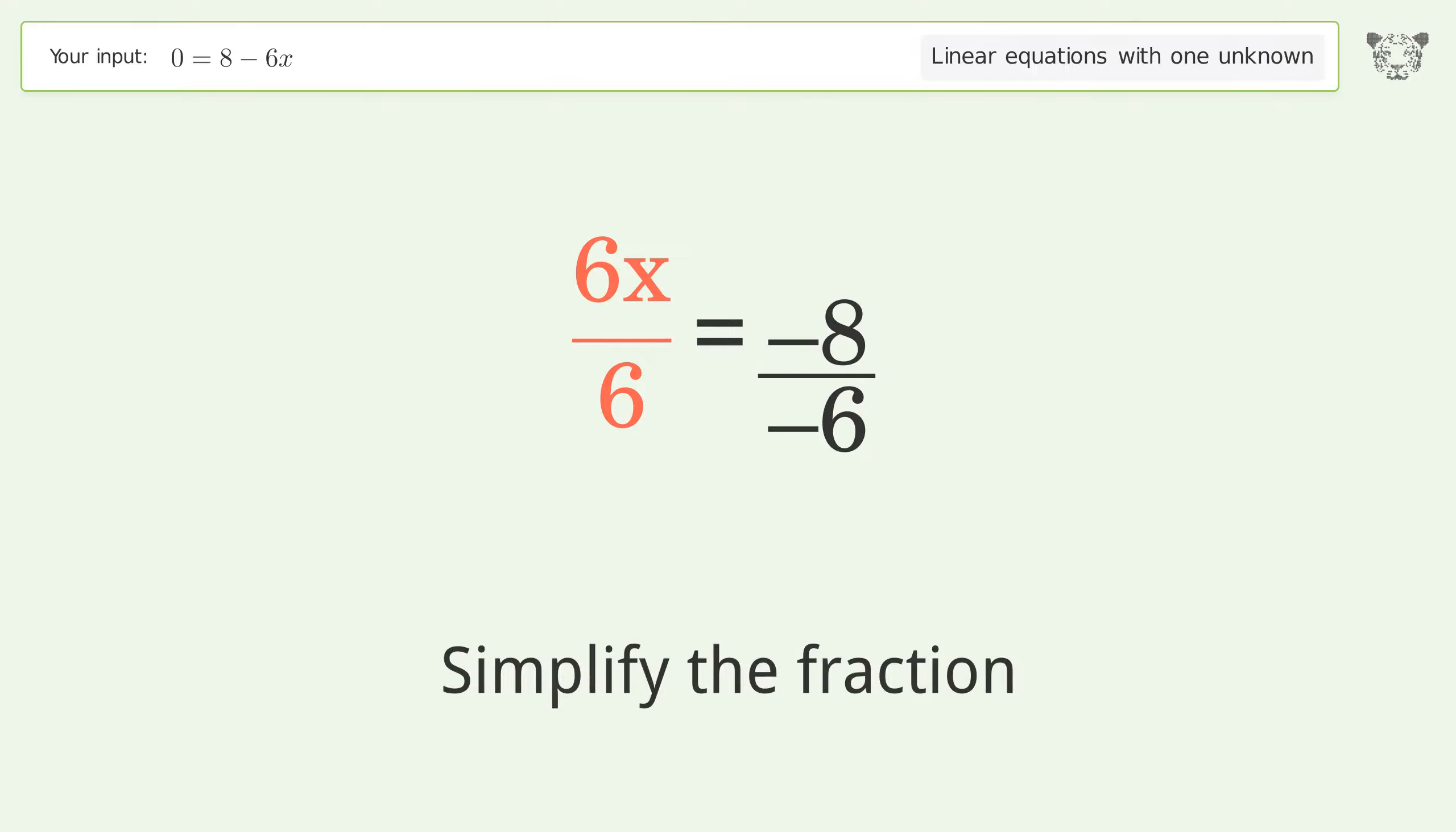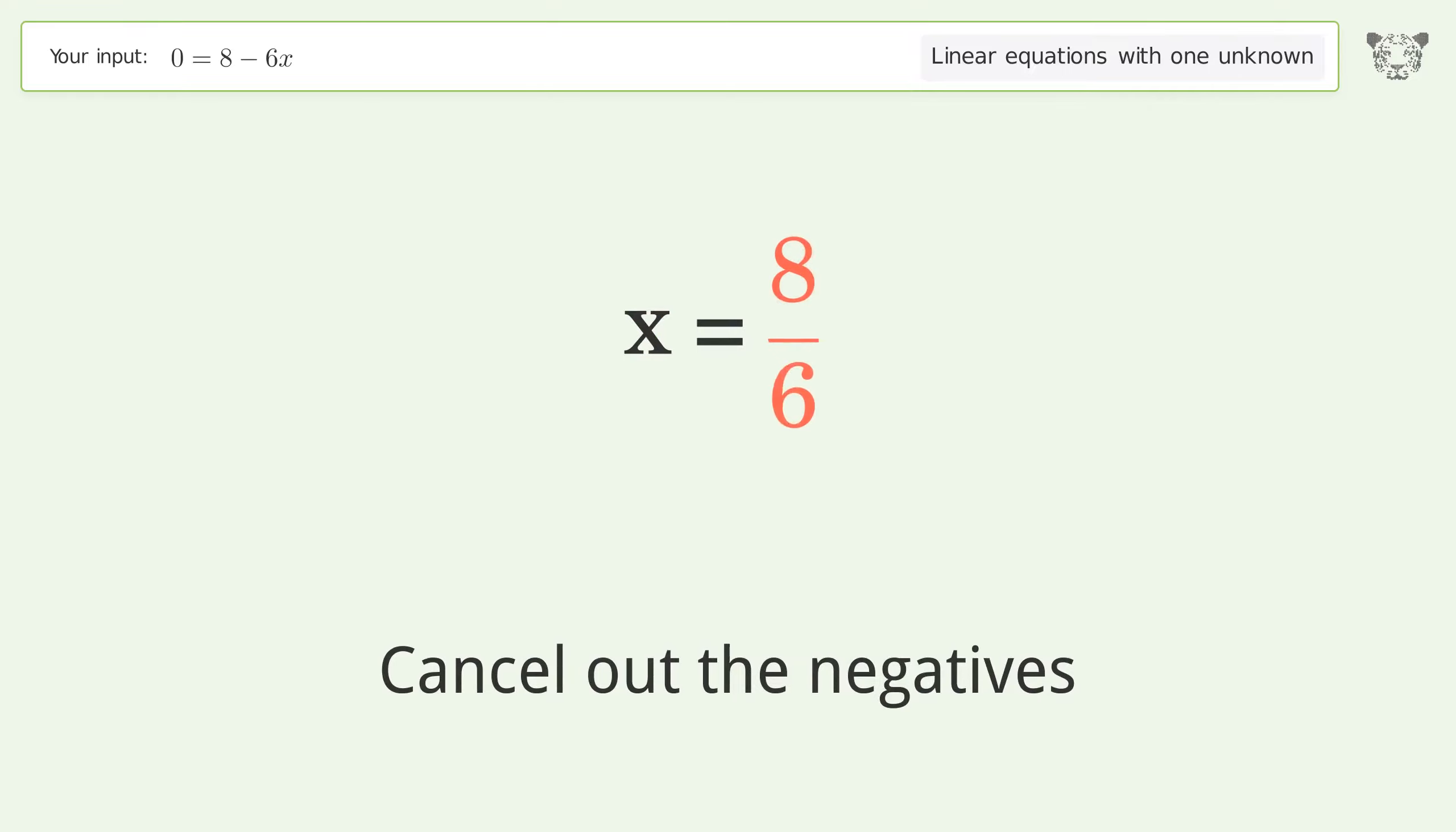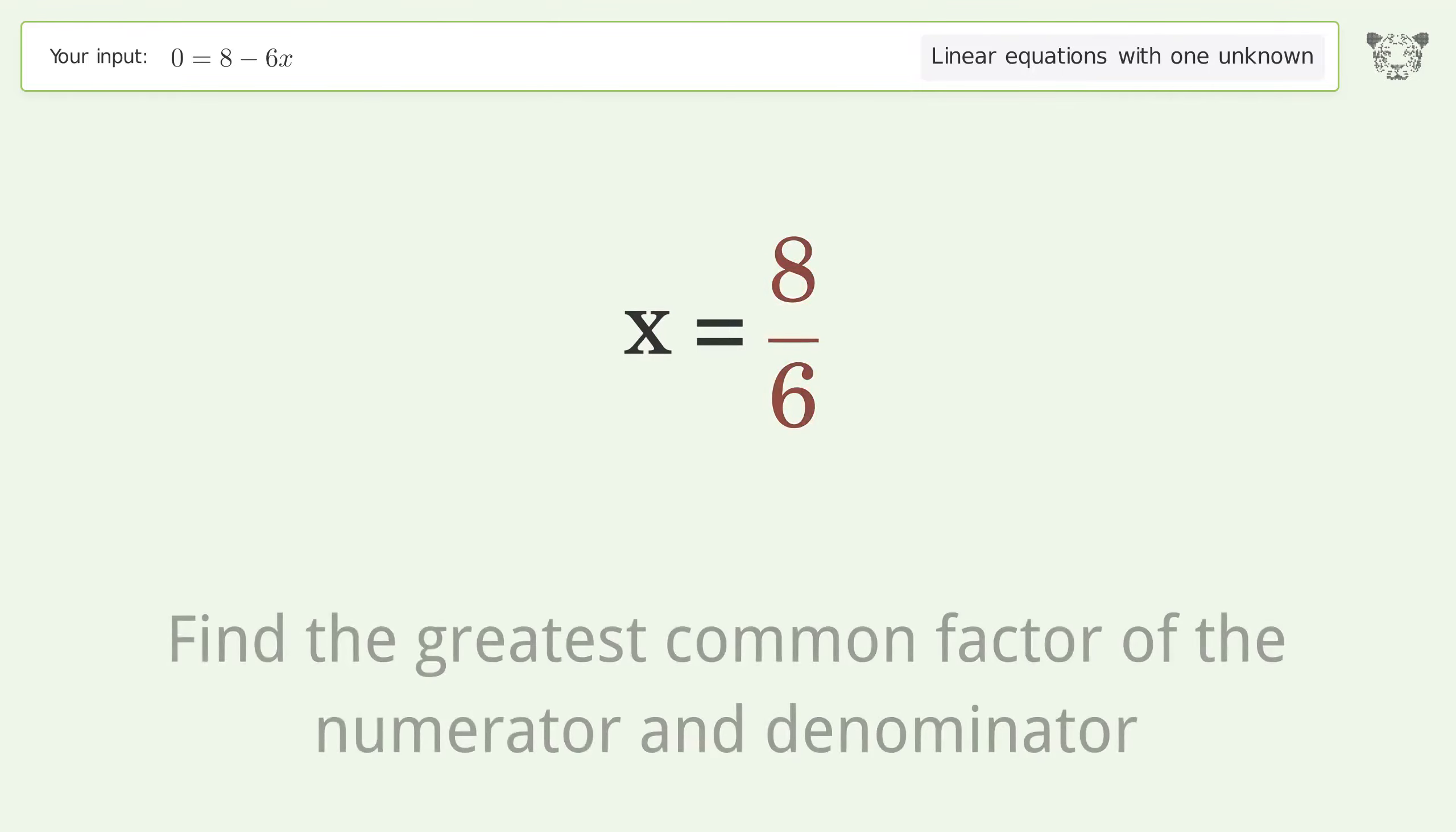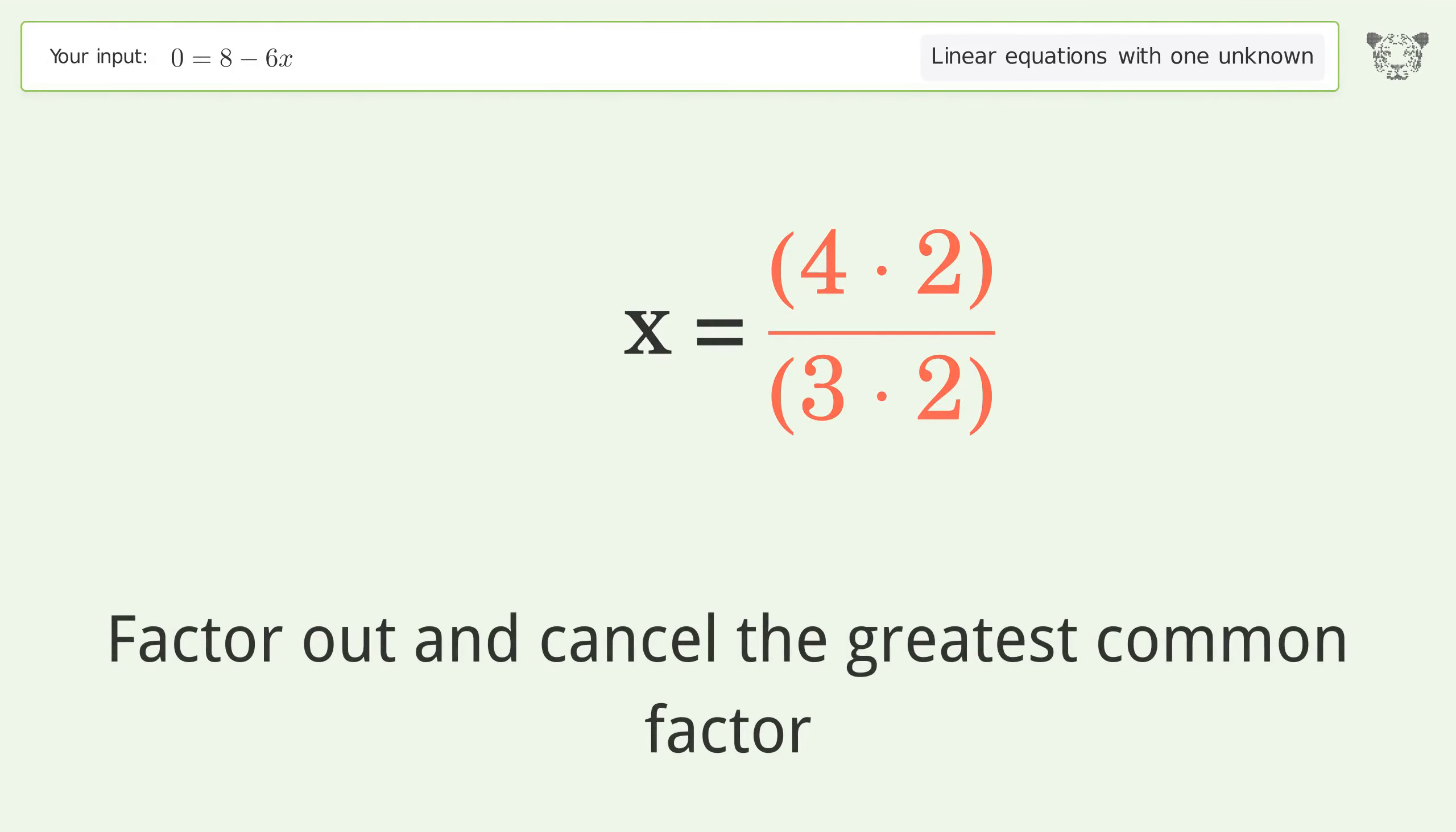Simplify the fraction. Cancel out the negatives. Find the greatest common factor of the numerator and denominator. Factor out and cancel the greatest common factor.